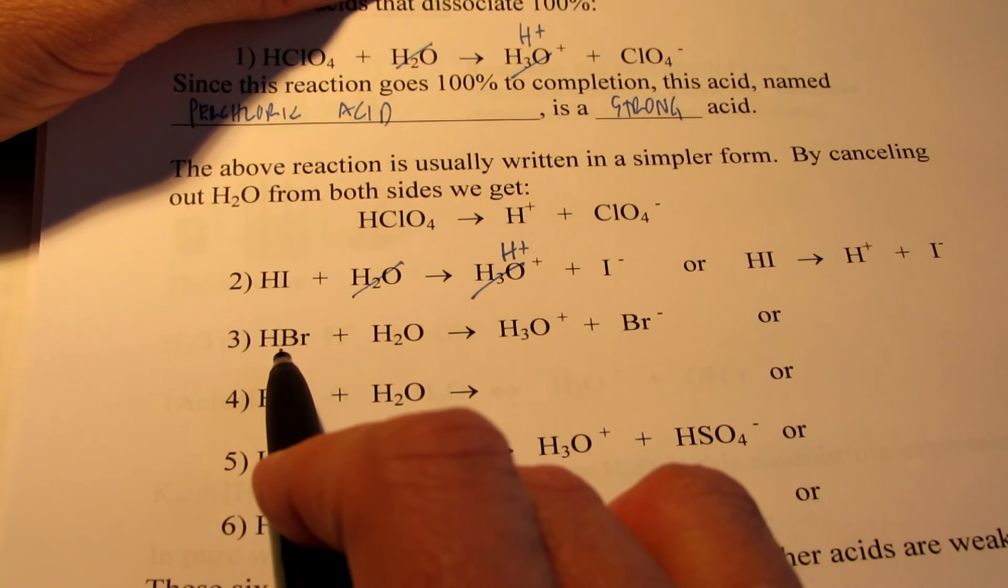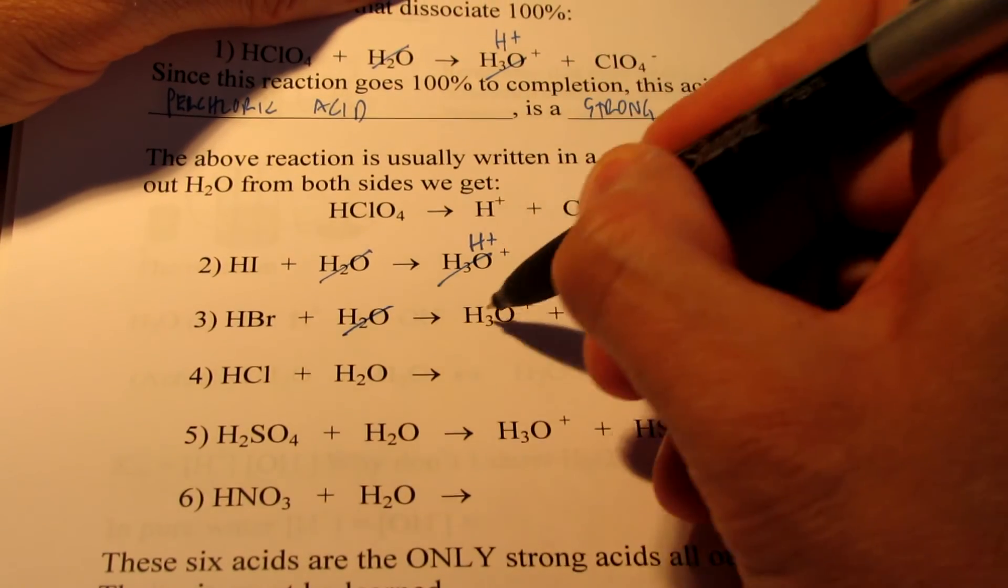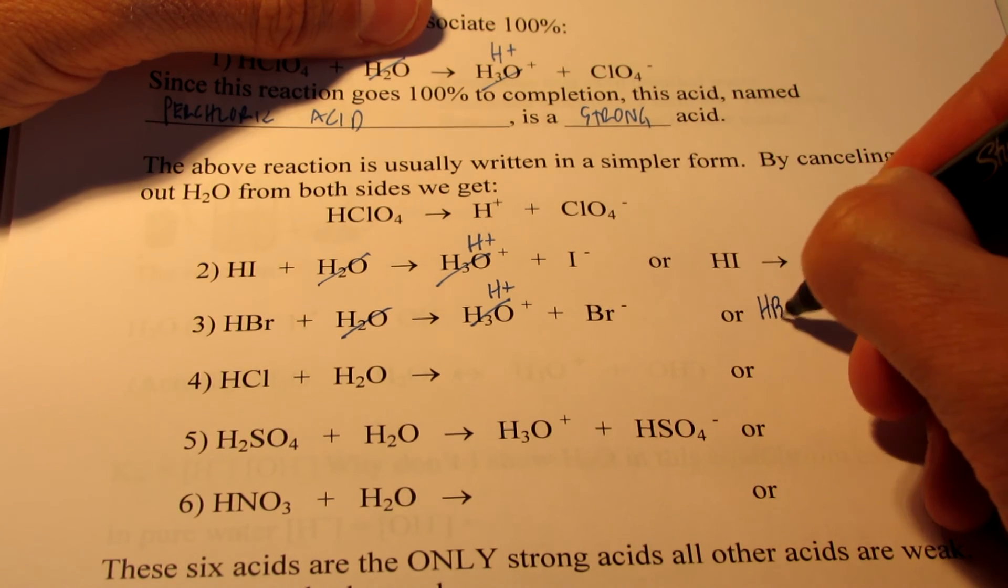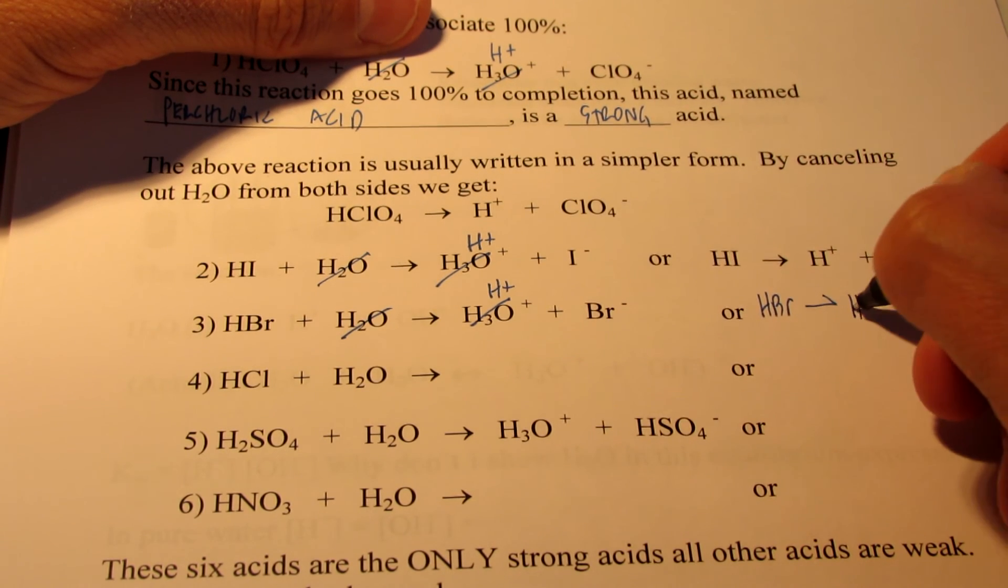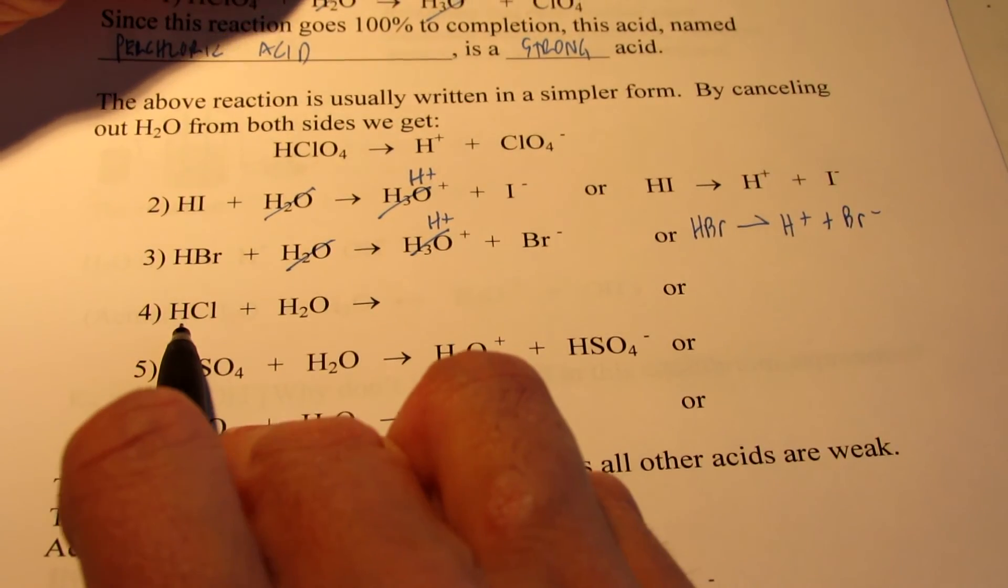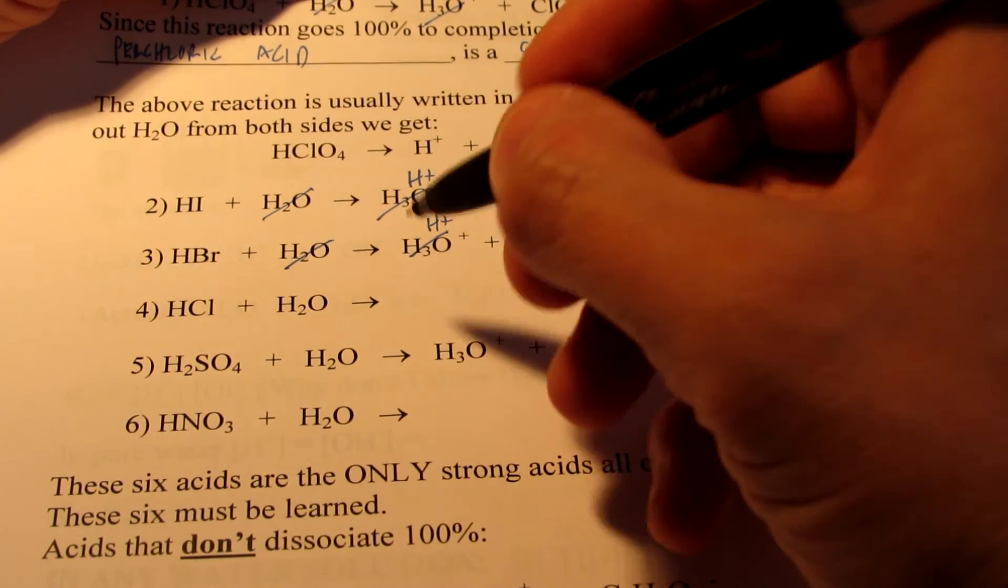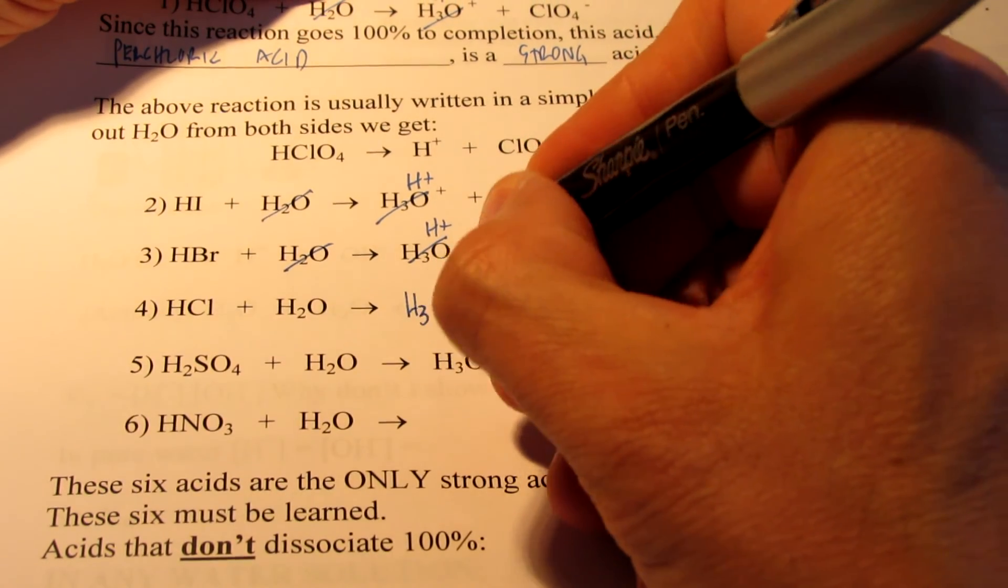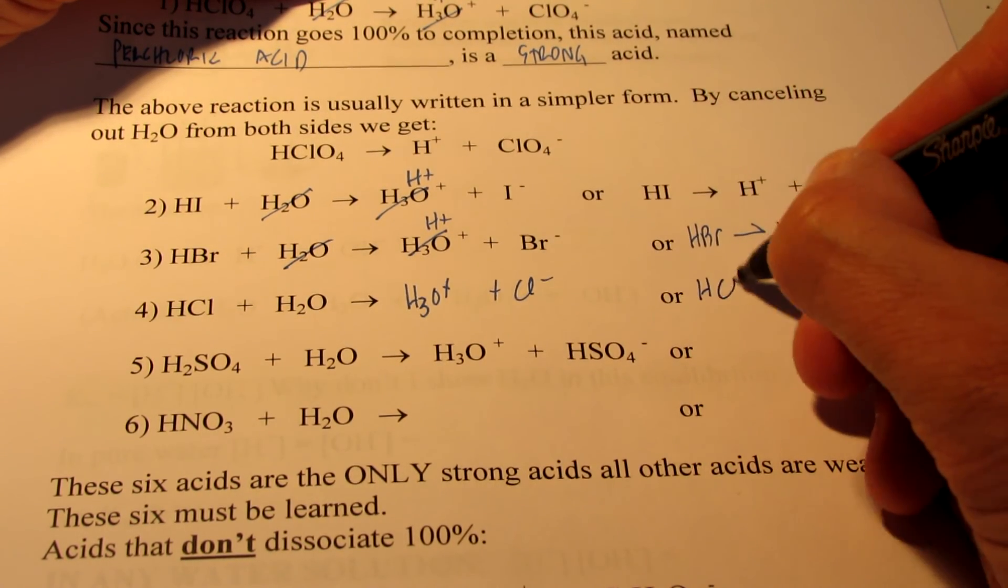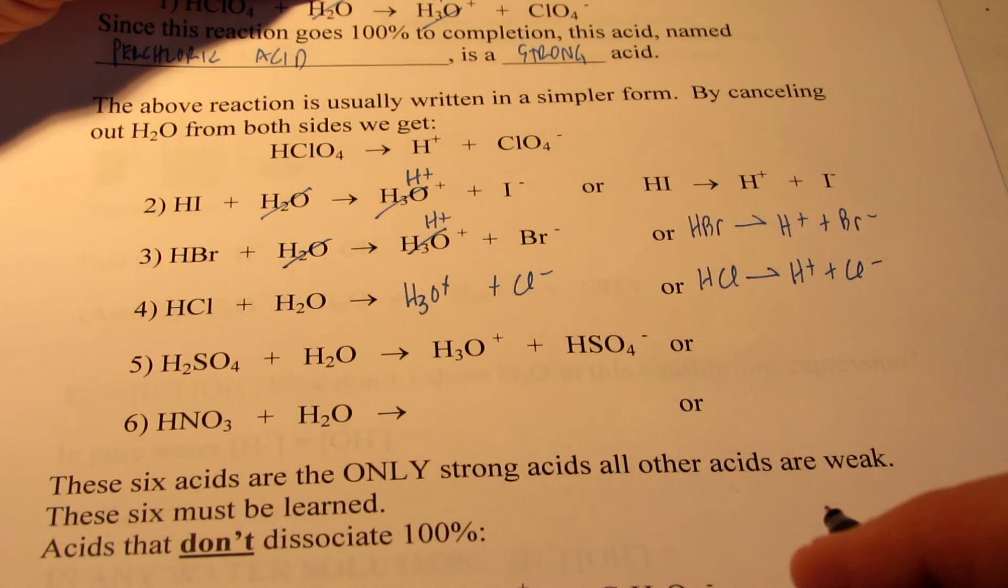HBr is another strong acid, called hydrobromic acid. If we cancel the water out of both sides, we end up with HBr forming H+ and Br negative. Hydrochloric acid is another strong acid. We end up forming H3O+ and Cl negative, or we could write it as HCl forms H+ and Cl negative when dissolved in water.